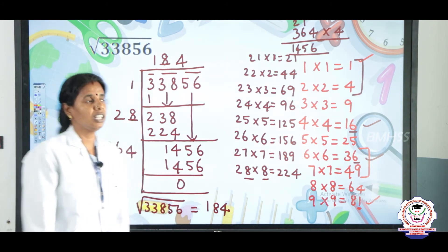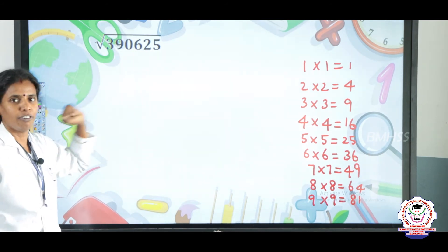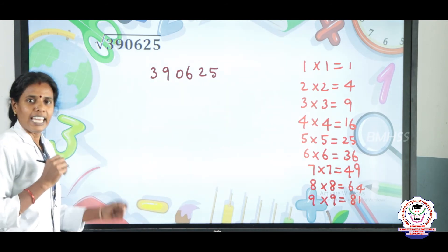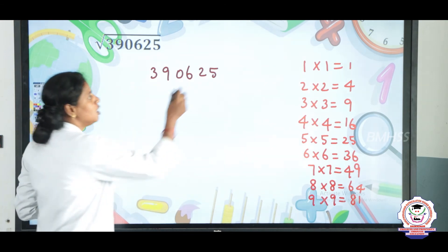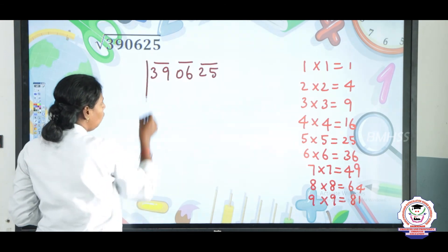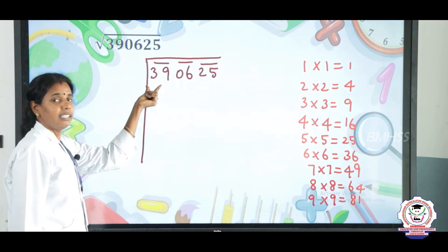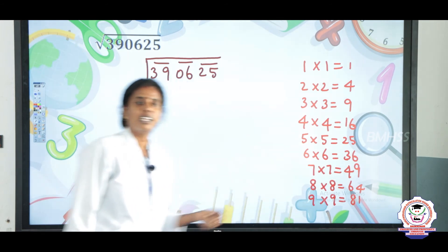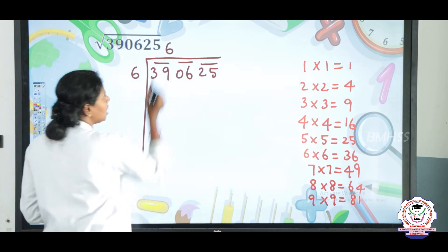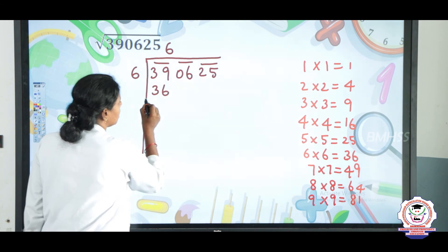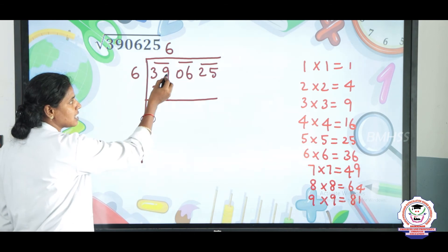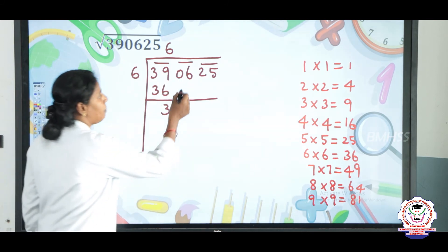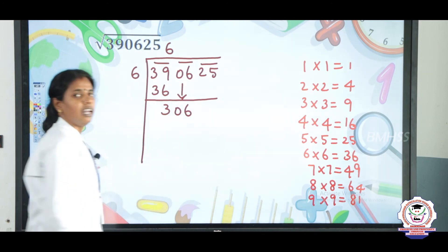One more example using long division method: find the square root of 390625. First pair from the unit digit: 39, 06, 25. The first pair is 39; the nearest square in the table is 36. So write 6 in both the divisor and quotient. 6×6=36; subtract: 39 minus 36 is 3.